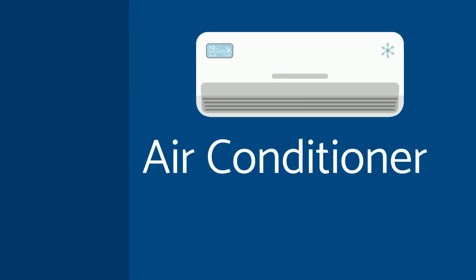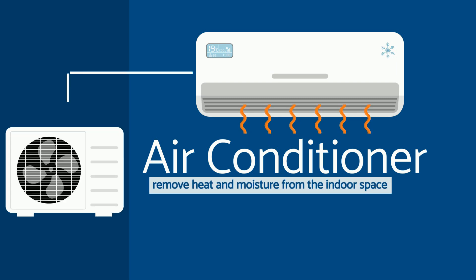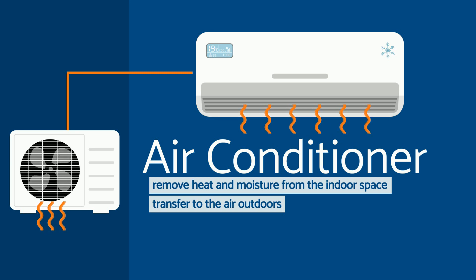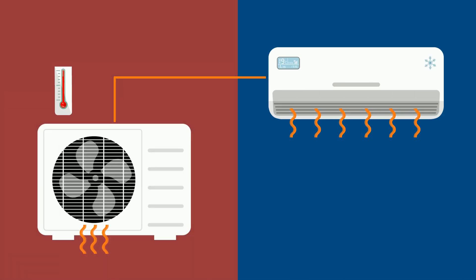The air conditioner actually removes heat and moisture from the indoor space and transfers it to the air outdoors. The heat that has been transferred from this air is carried by a refrigerant to the outdoor heat exchanger. The outdoor ambient temperatures can be quite high during the periods when your space requires air conditioning.